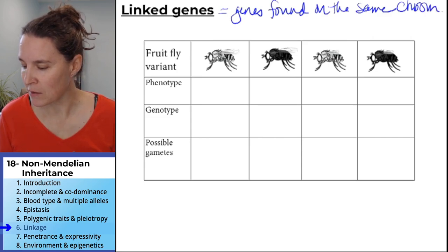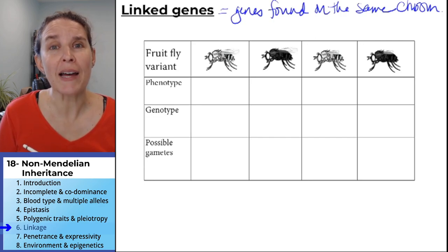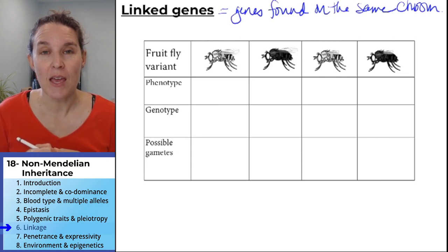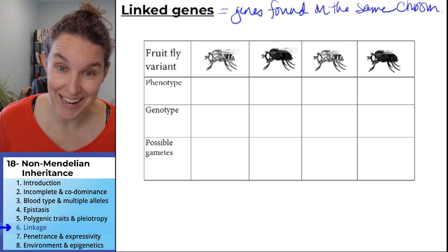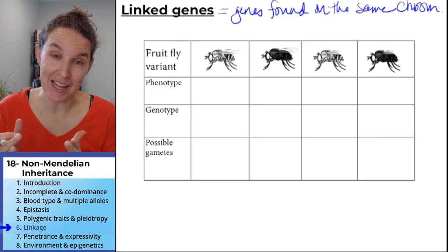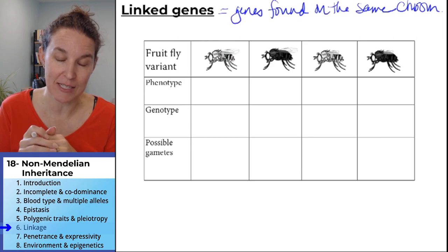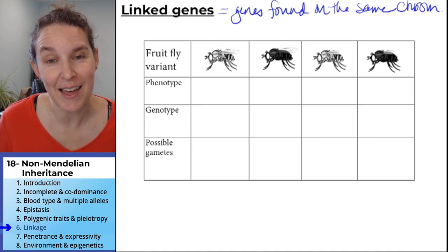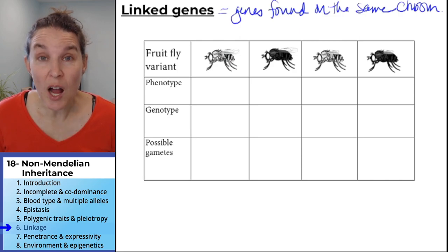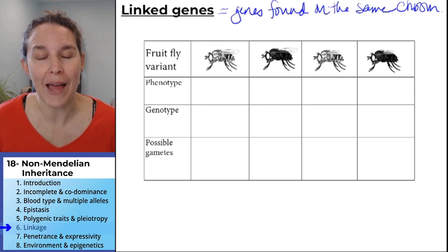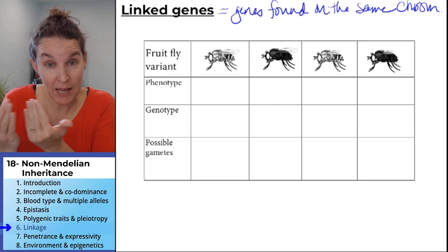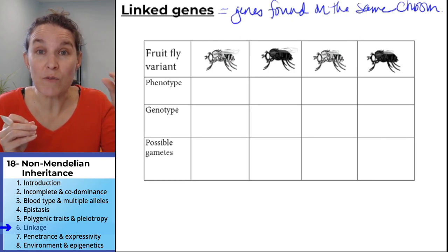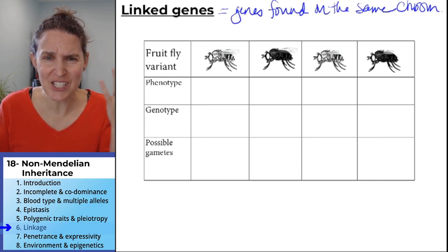Remember when we talked about Mendel? We said you should go buy a lottery ticket, Mr. Mendel, because you were very, very lucky. In all actuality, I bet Mendel actually doctored his data and left out data that didn't match his expected phenotypes or his expected ratios. The seven traits he studied all happened to be fully dominant and recessive, and each trait was coded for by a gene on a separate chromosome.